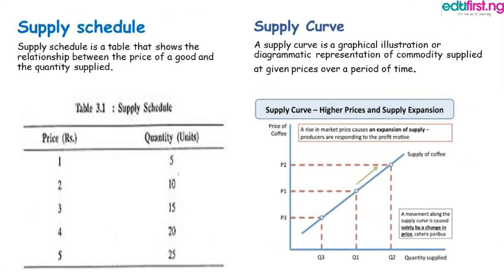The supply schedule is a table that shows the relationship between the price of a good and the quantity supplied. In our table, we can see prices in rand: 1, 2, 3, 4, and 5 rand, and the different quantities in units supplied. Every increase in price — for example from 1 rand to 2 rand — results in an increase in quantity from 5 units to 10 units.